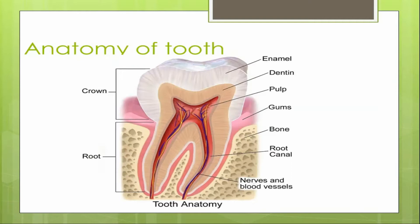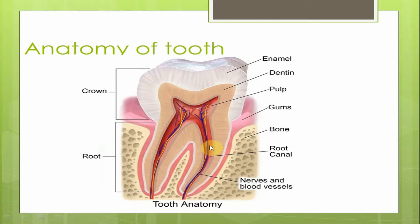The tooth has a crown and a root. The crown has an outermost covering of enamel and an inner layer of dentine, and the root has an outer covering of cementum and an inner layer of dentine. The pulp is the soft tissue component of the tooth; it lies in the innermost portion and is composed of connective tissue cells, blood vessels, and nerves.